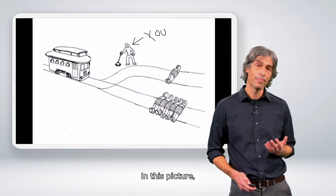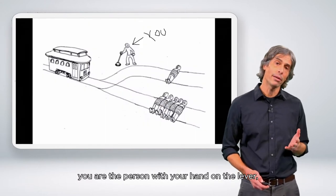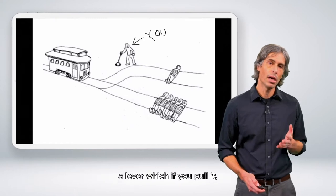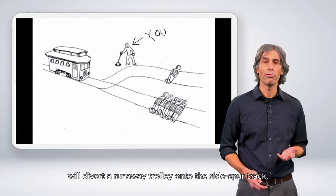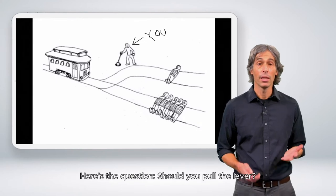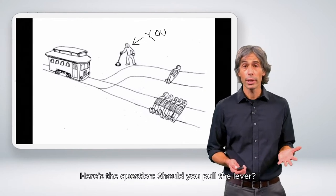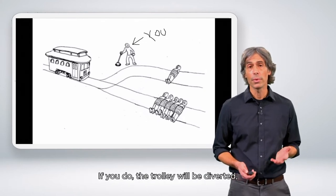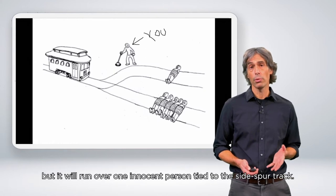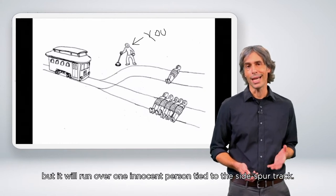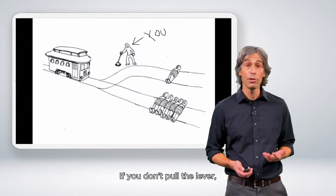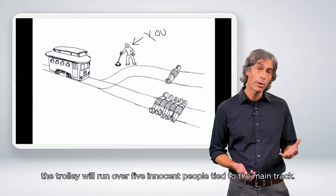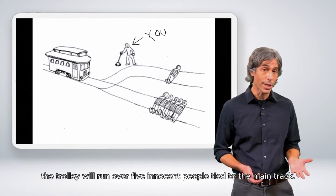In this picture, you are the person with your hand on a lever. A lever which, if you pull it, will divert a runaway trolley onto the sidespur track. Here's the question. Should you pull the lever? If you do, the trolley will be diverted, but it will run over one innocent person tied to the sidespur track. If you don't pull the lever, the trolley will run over five innocent people tied to the main track.